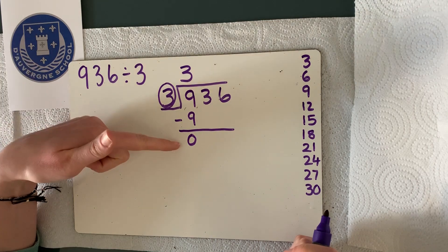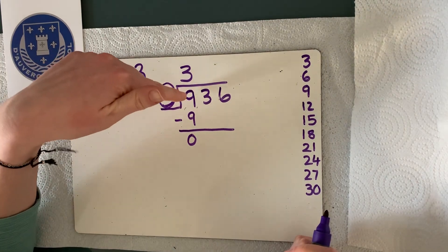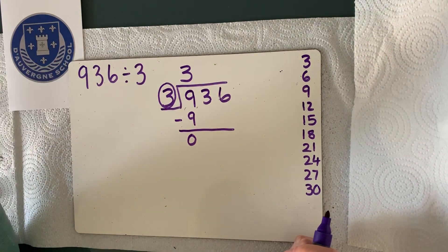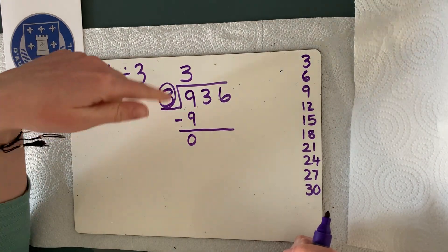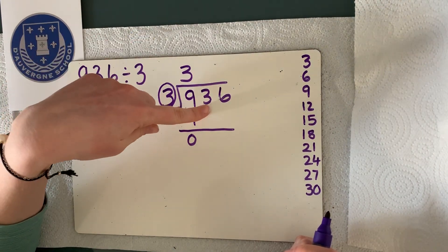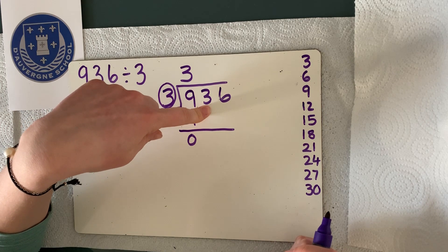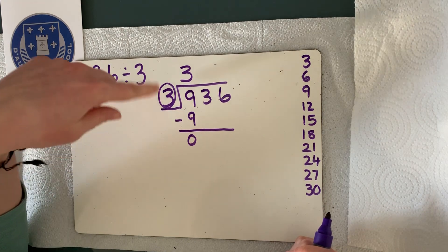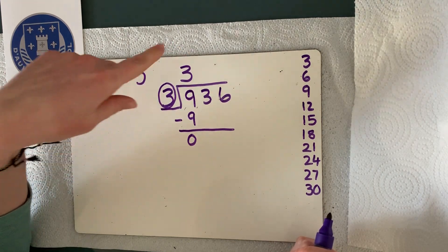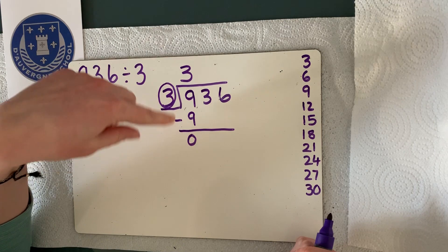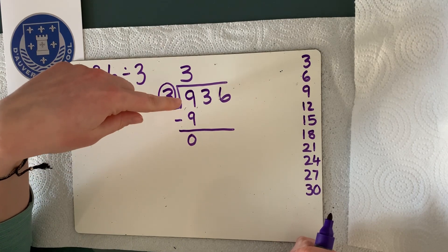Now that we've done step one, which is our hundreds, we go on to step two, which is our tens. And all we are doing is repeating the same method that we used for our hundreds number.